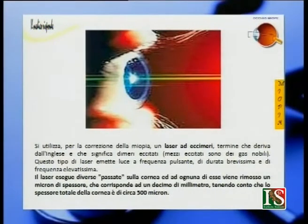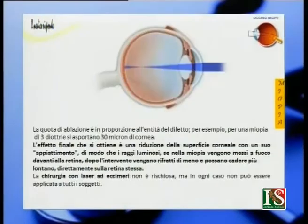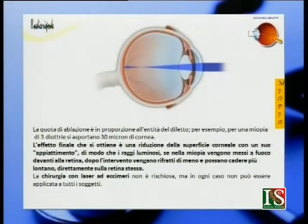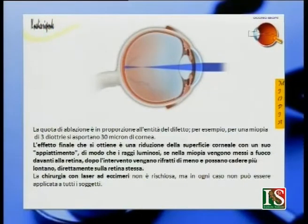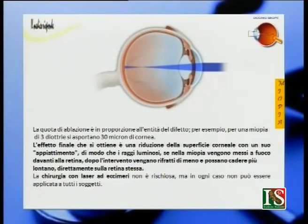La quota di ablazione è in proporzione all'entità del difetto. Per esempio, per una miopia di 3 diottrie si asportano 30 micron di cornea. L'effetto finale è una riduzione della superficie corneale con un suo appiattimento, di modo che i raggi luminosi, che nella miopia vengono messi a fuoco davanti alla retina, dopo l'intervento vengono rifratti di meno e cadono direttamente sulla retina.